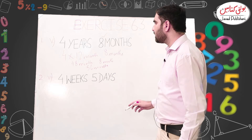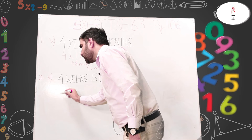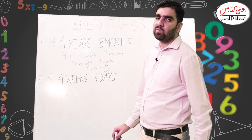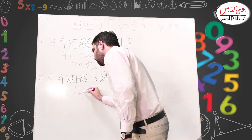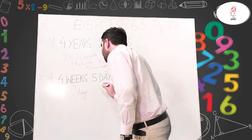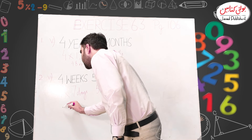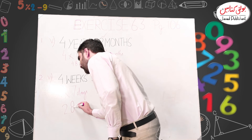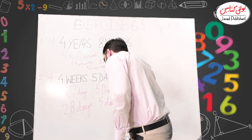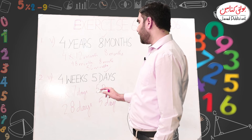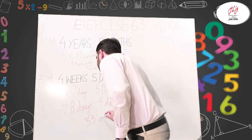We have four weeks and five days. The five days are already in days, so we leave them as they are — we only convert the four weeks. As I explained, we multiply the weeks by seven because one week has seven days. So four multiplied by seven gives us twenty-eight days, plus the five days. We add both days together: twenty-eight plus five equals thirty-three days.